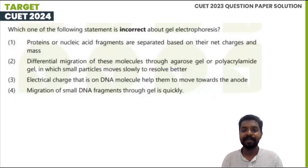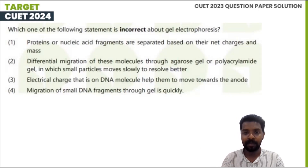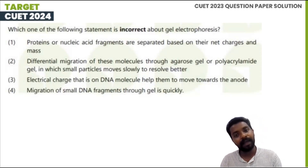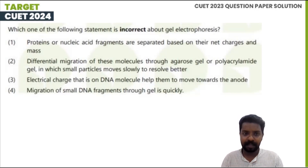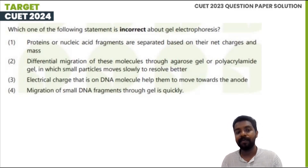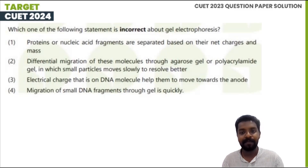Which one of the following statements is incorrect about gel electrophoresis? Proteins or nucleic acid fragments are separated based on their net charges. Differential migration of molecules through agarose or polyacrylamide gel occurs, in which small particles move faster. The negative electrical charge of DNA molecules helps them to move towards the anode.